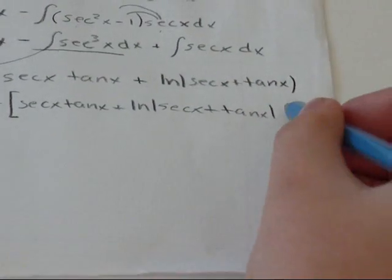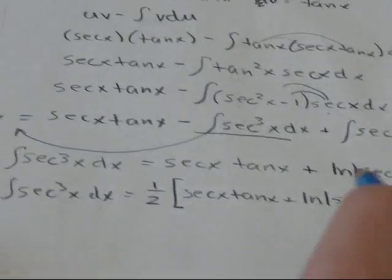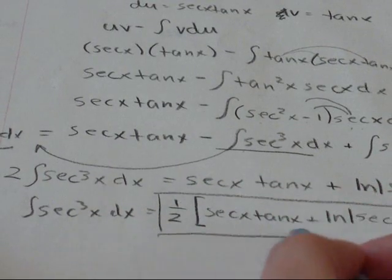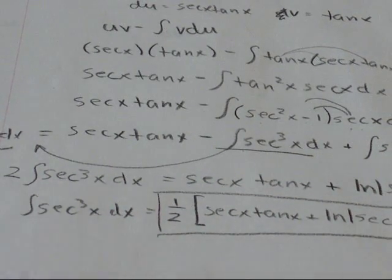Secant x tan x plus log of the absolute value of secant x plus tan x. And, try not to forget your plus c. So here's, this is the answer. I hope you found this video helpful, and good luck on your math!